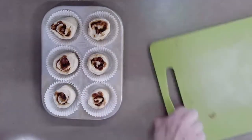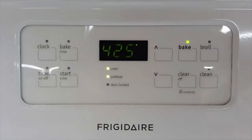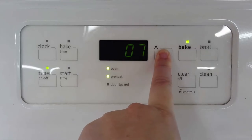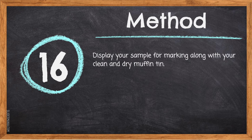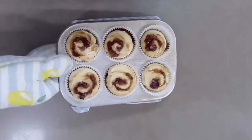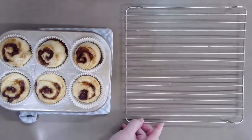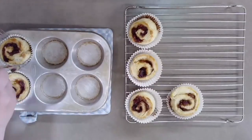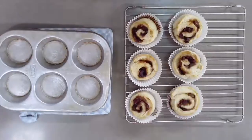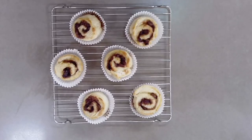Step 15: Bake for 12 to 15 minutes. Baking temperatures are often quite short for biscuits — they rise quickly with the baking powder reaction and form their structure. We want the outsides to be just hardened but the insides pillowy soft. Step 16: Display your sample for marking along with your clean and dry muffin tin. Put a hot mat on the counter, then use two forks to transfer the pinwheels to a cooling rack quickly, as the muffin tin stays hot and could burn the bottoms. Spread them out on the cooling rack for good air circulation.